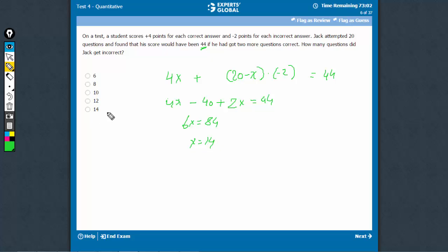See, 14 is an answer choice, but that's not correct because of two things. One, 14 is the case when he would have got 2 extra questions right. So that means he got only 12 questions right.